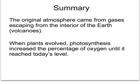In summary, the original atmosphere came from gases escaping from the interior of the Earth — in other words, from volcanoes. Those gases were largely carbon dioxide and water vapour. And when plants evolved, photosynthesis increased the percentage of oxygen until it reached today's level.